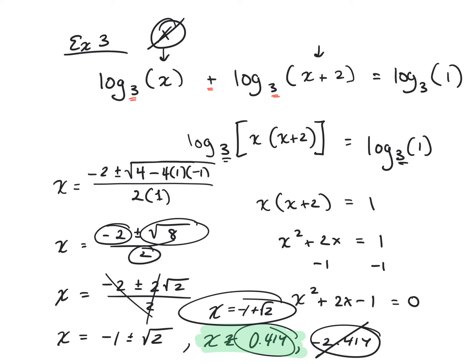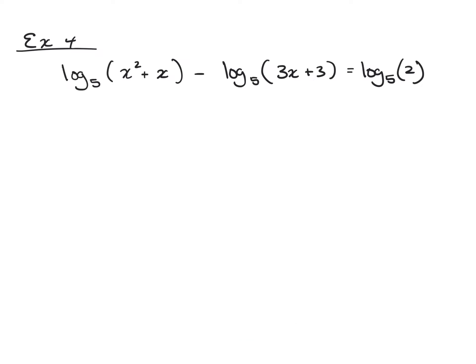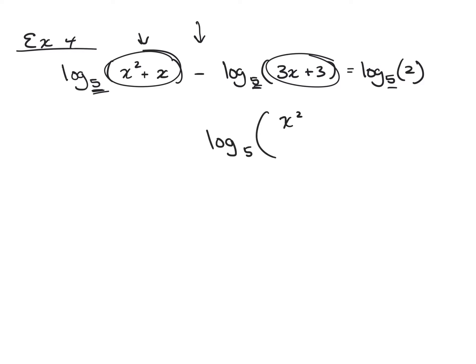Example four is a longer problem involving the subtraction rule. All the logarithms share the same base, which is good. Subtracting logarithms of the same base means we divide the interiors — the first is the numerator, the second is the denominator. So log base 5 of (x² + x) minus log base 5 of (3x + 3) = log base 5 of 2 becomes log base 5 of [(x² + x) / (3x + 3)] = log base 5 of 2.